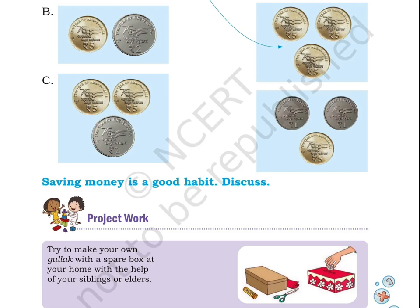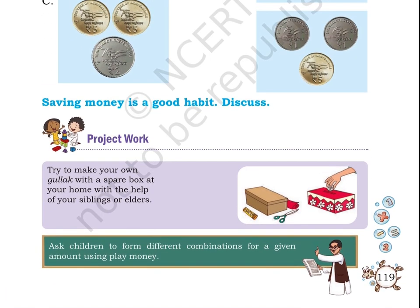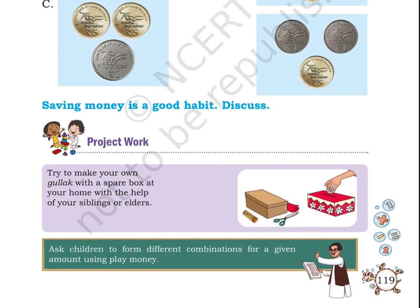Saving money is a good habit — tell why. Project work: Try to make your own piggy bank with a spare box at your home with the help of your siblings. On the right hand side of the box, there is a picture of making a piggy bank with a spare or cardboard box. A hand is dropping a 10 rupee coin into the box. Ask children to form different combinations for a given amount using play money.